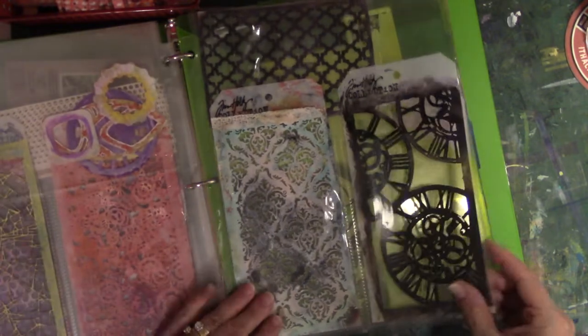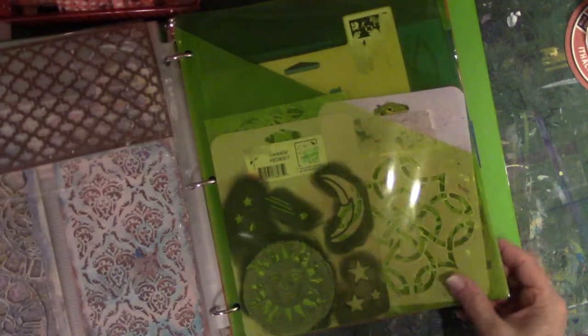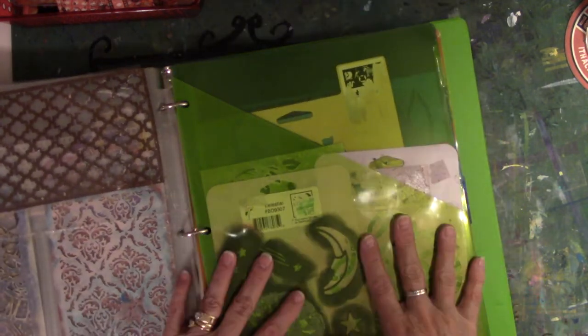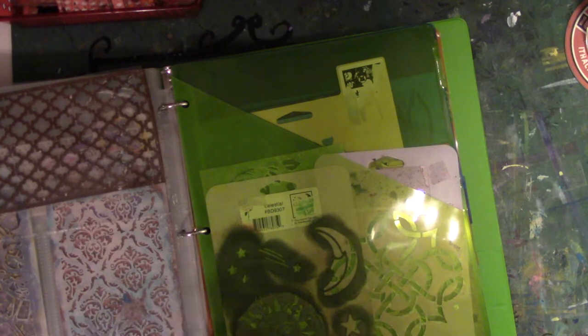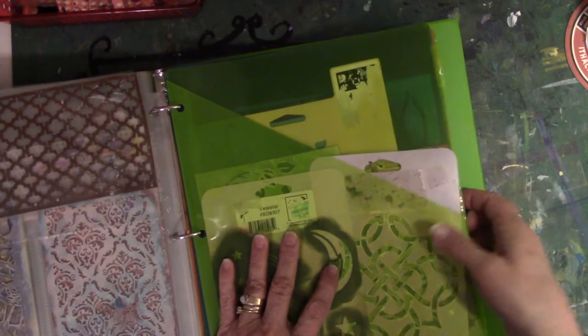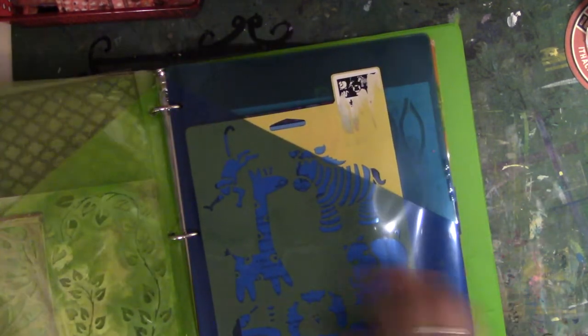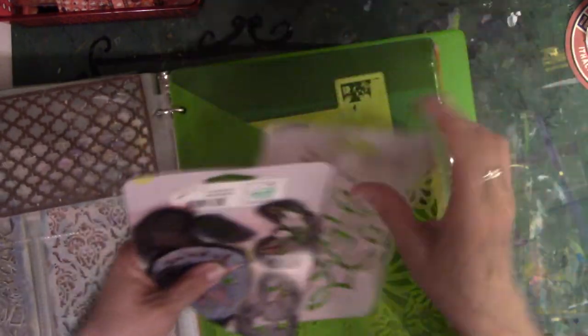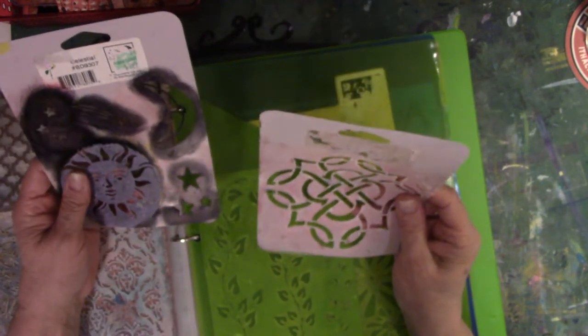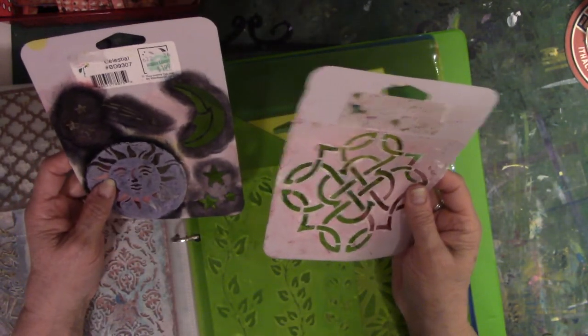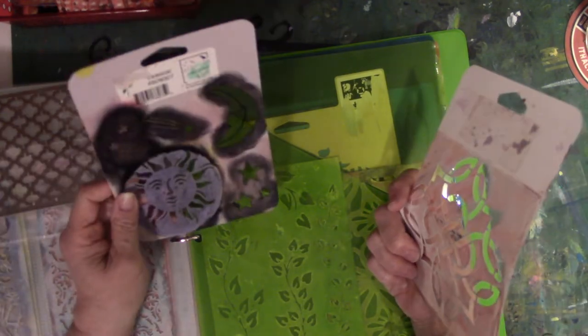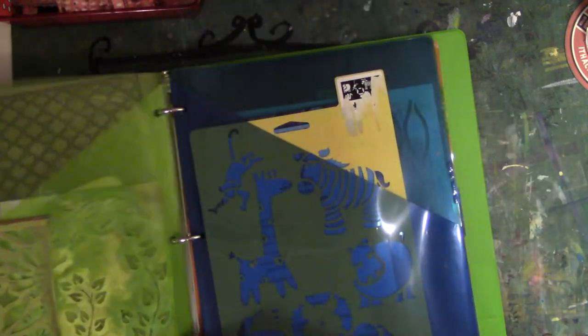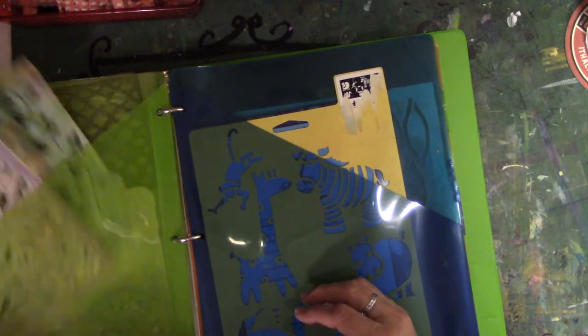So this is my system for my stencils. Now I have stencils that were too big to go in these and I didn't want to get another album. So I saw that somebody else used these double-sided pockets. So anything that was kind of off the beaten track sort of size, like this stuff that's really meant to be on a wall, not really for stenciling, I bought these at Hobby Lobby for a dollar ninety-nine each. So I just put them in the pocket here.